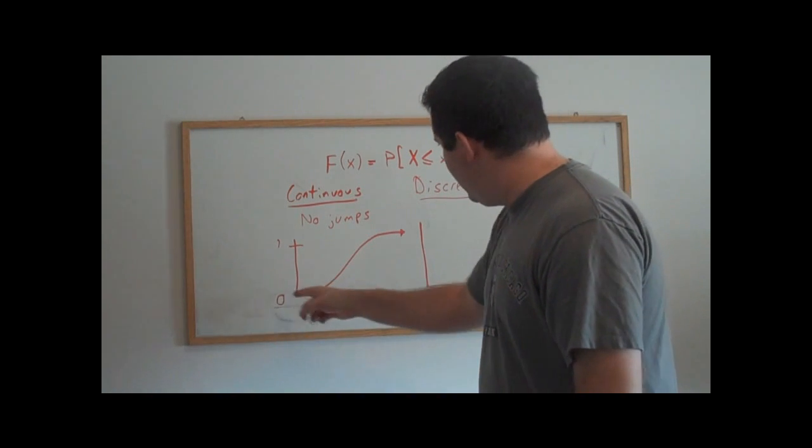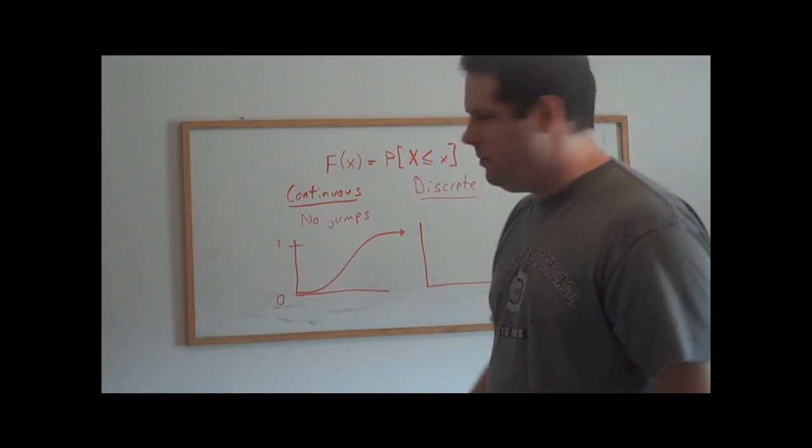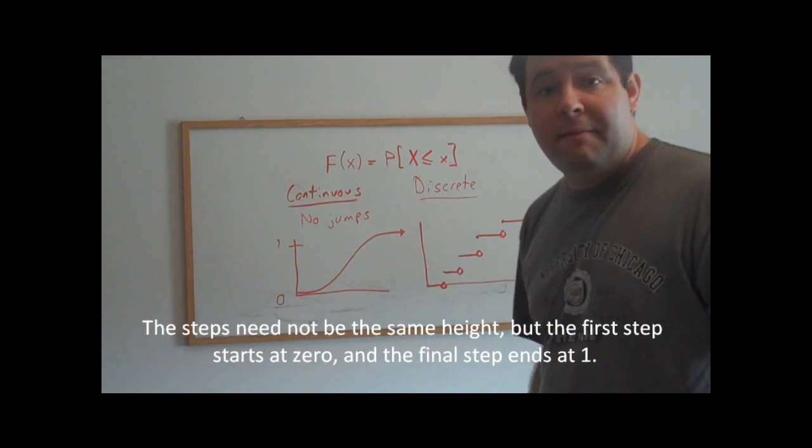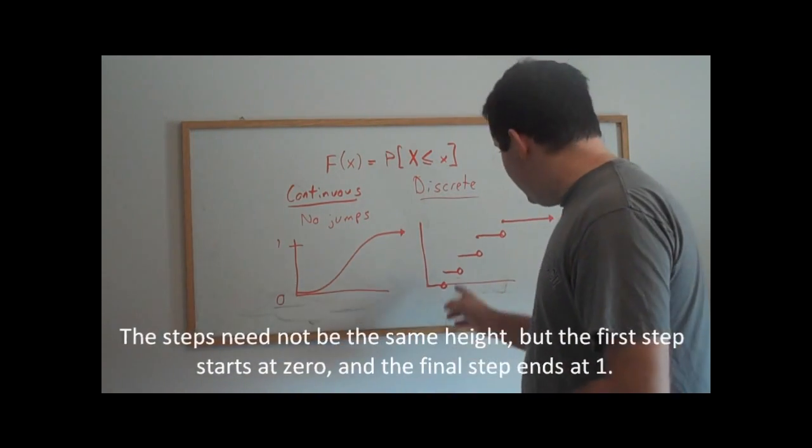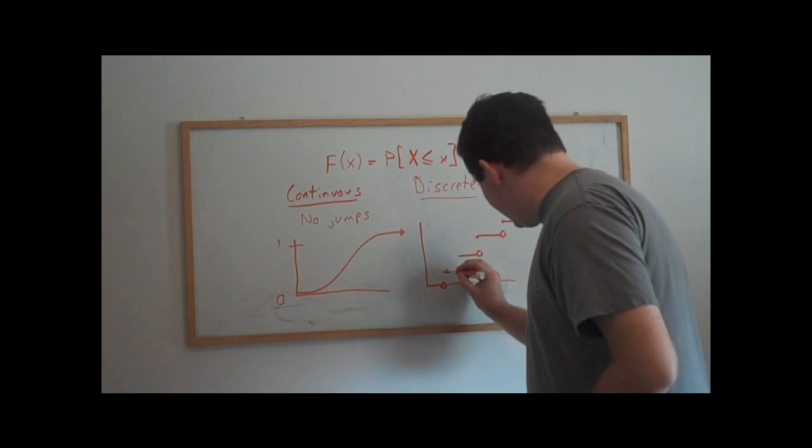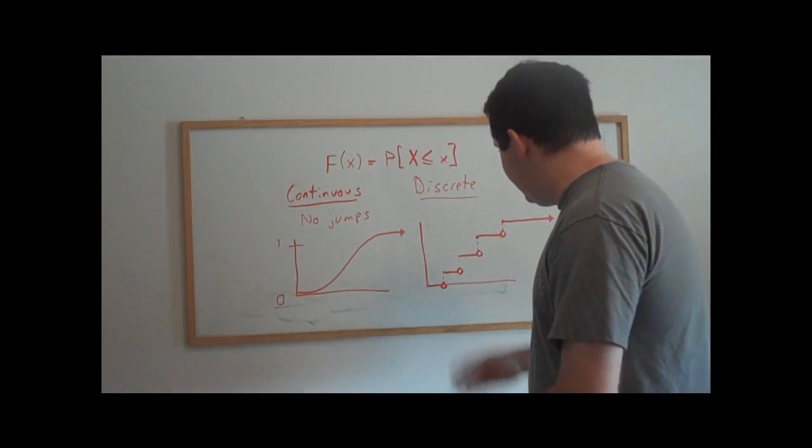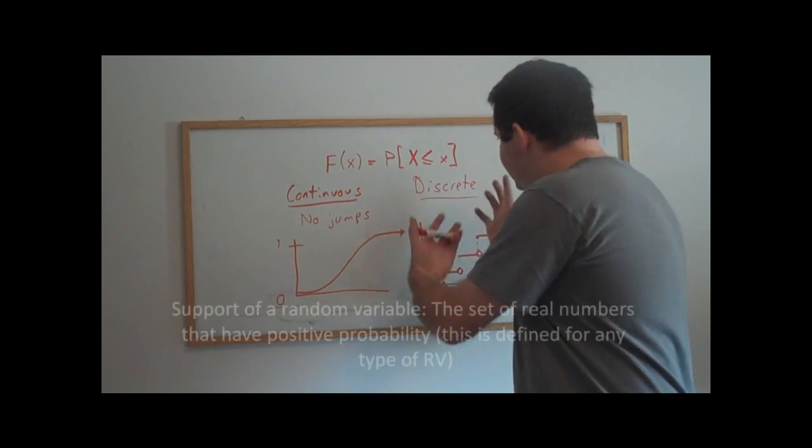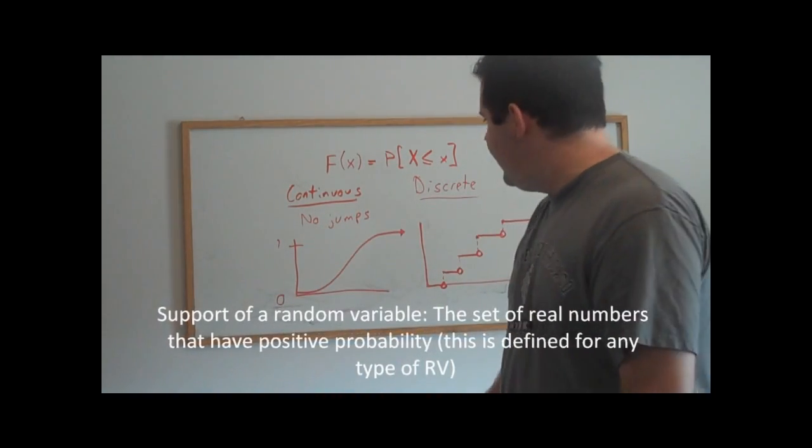So a discrete random variable looks like this. It looks like a step function with our distribution function here. And it only takes on probability at the jump points. These jump points would be the support of the discrete random variable.